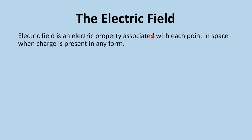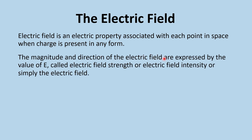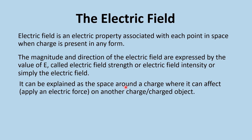The electric field is an electric property associated with each point in space when a charge is present in any form — whether it's a charged particle or an object that carries a certain amount of charge. The magnitude and direction of the electric field are expressed by the value E, called the electric field strength, electric field intensity, or simply the electric field. We can use all three terms interchangeably.